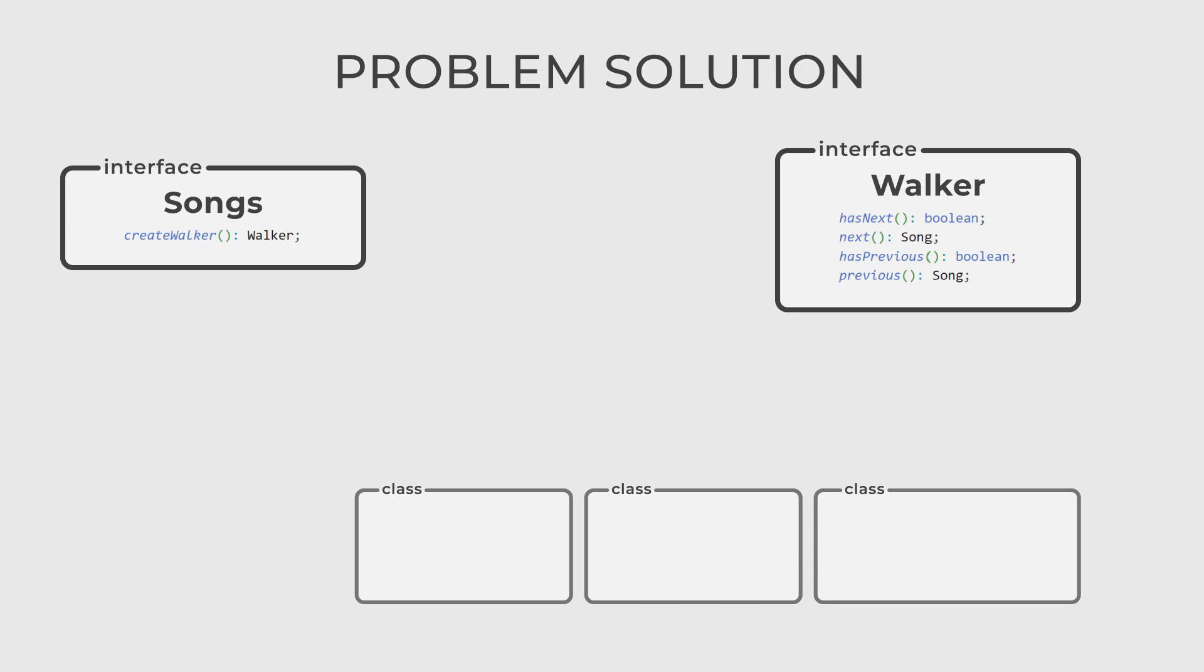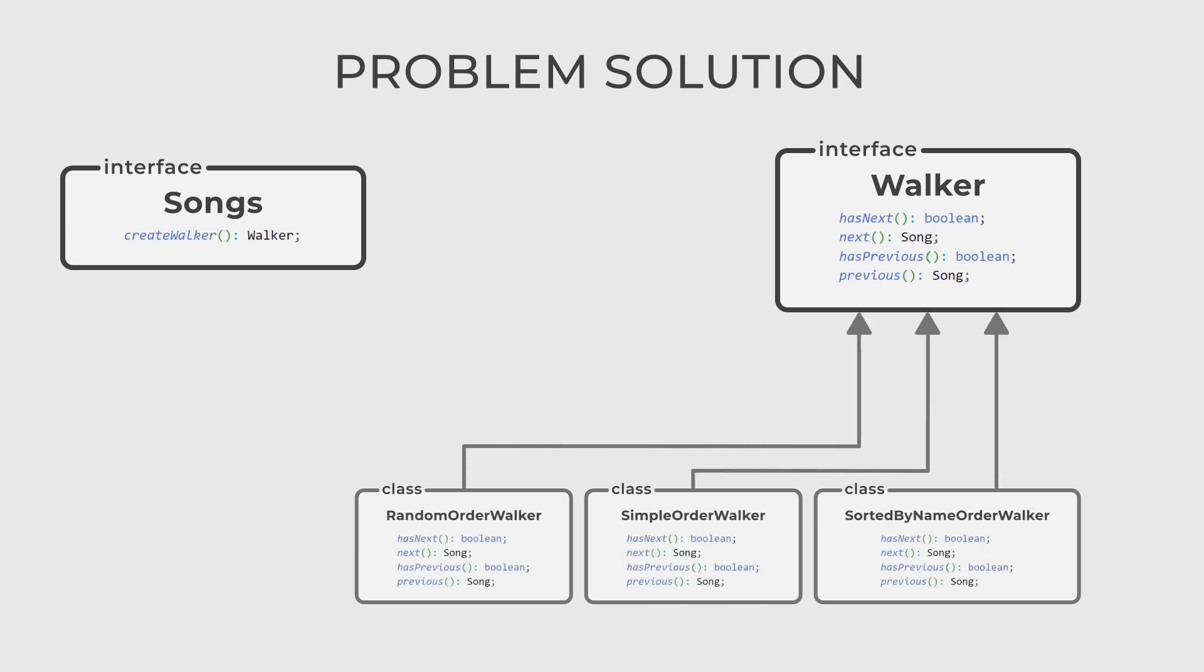After that, let's create the concrete walkers. Classes that are implementing the walker, for example, randomOrderWalker, simpleOrderWalker, and sortedByNameOrderWalker. Each walker knows their specific way to iterate over the song collection.